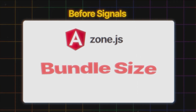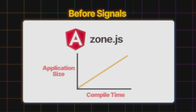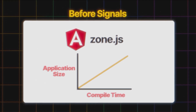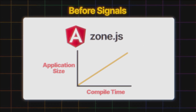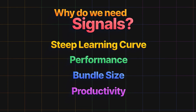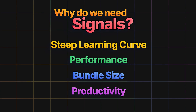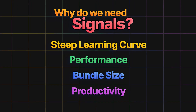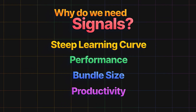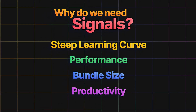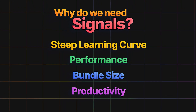The combination of these two effects leads to reduced productivity. As an application gets bigger, it requires more time to compile, which eventually leads to reduced productivity. With the introduction of signals in Angular, we can now build a complete zoneless application that does not rely on ZoneJS to detect changes. This significantly improves overall performance and reduces the bundle size of an Angular application, since we can now go completely zoneless.